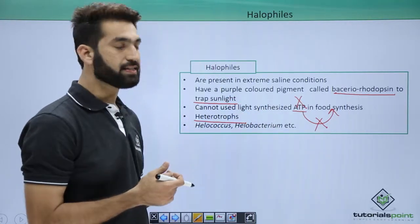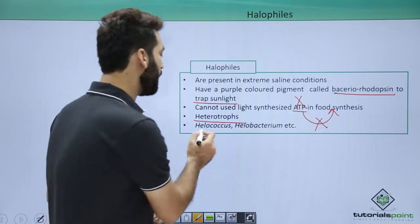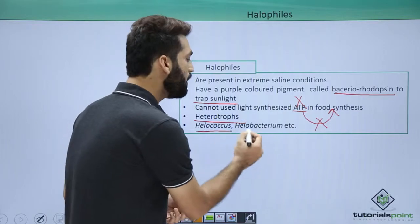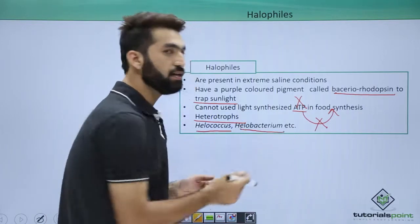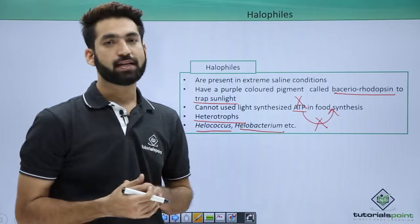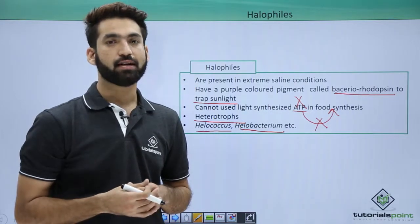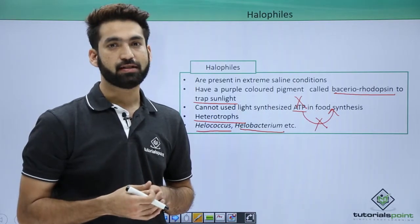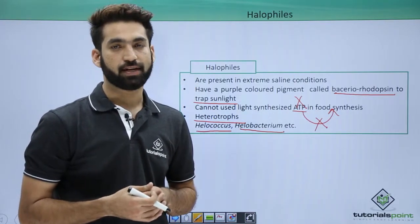Some examples of halophiles are halococcus and halobacterium. In the next session, we'll be discussing the details of thermoacidophiles.